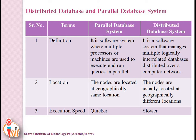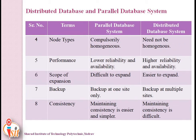Execution speed in a parallel database system is faster, while in a distributed database system execution speed is slower. Regarding node types, in a parallel database system the node types are compulsorily homogeneous, but in a distributed database system there is no such requirement — node types may be heterogeneous. In terms of performance, a parallel database system has lower reliability and availability, whereas a distributed database system has higher reliability and availability. The scope of expansion is difficult in parallel but easier in distributed systems.